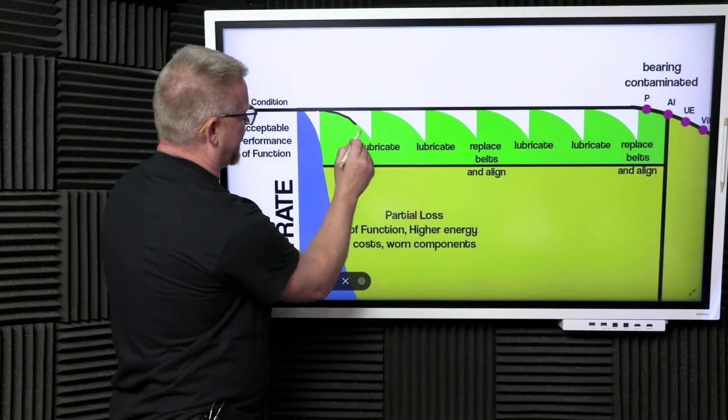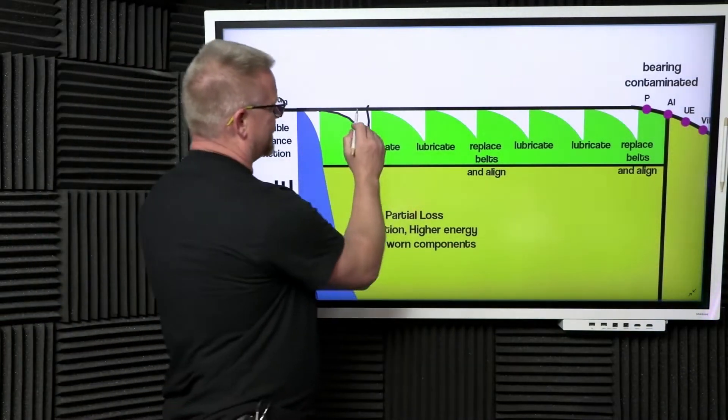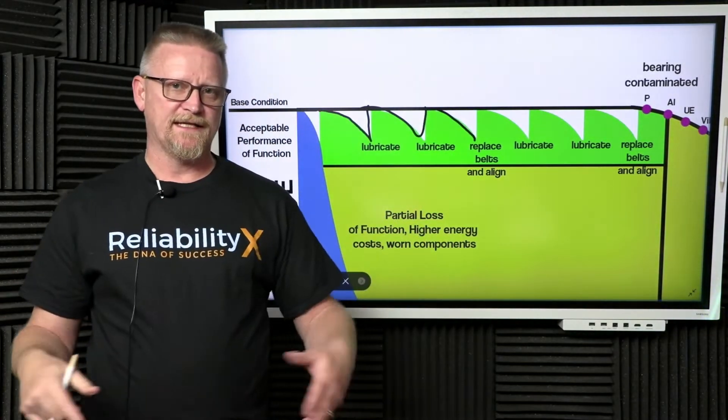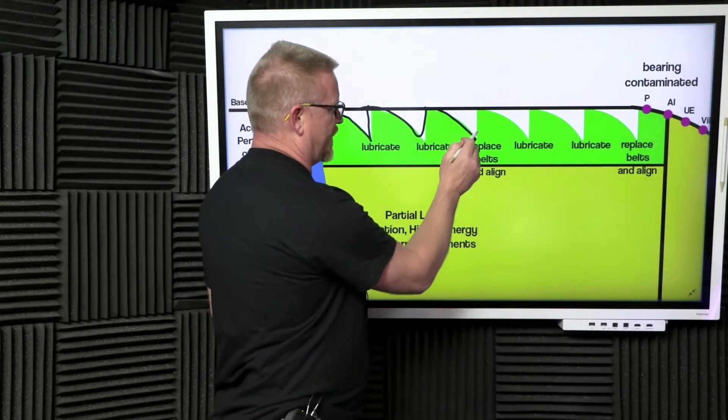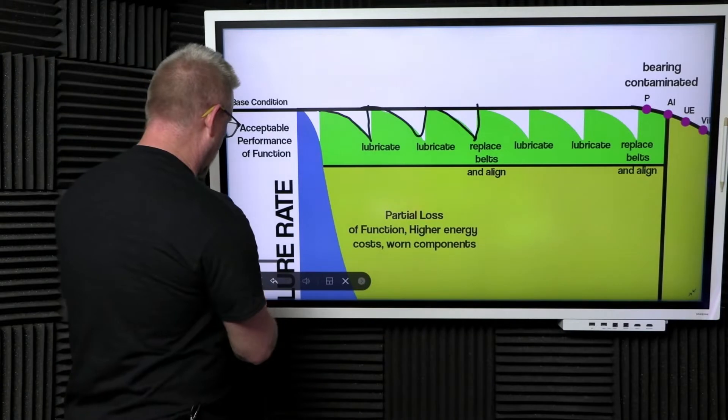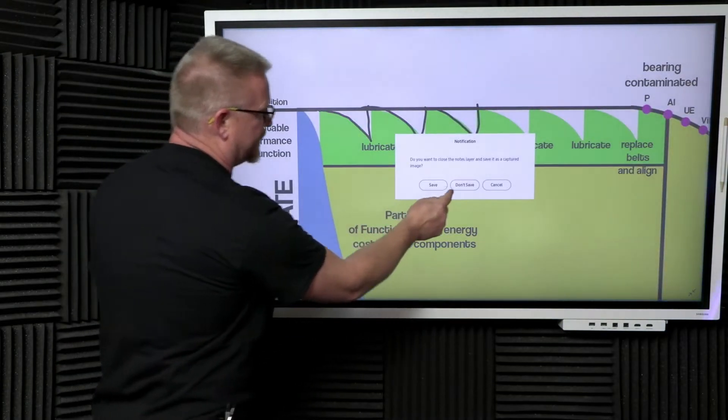Same thing—eventually we inspect the belts, realize they need to be replaced, we replace the belts and align, and we restore back to base condition. We continue this cycle over and over again throughout the life of the asset.